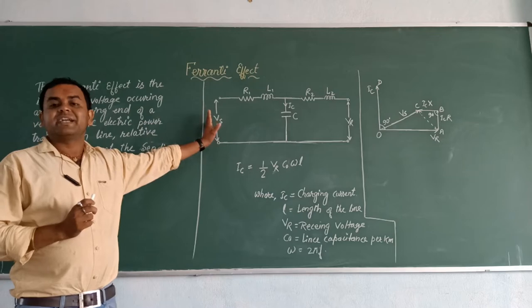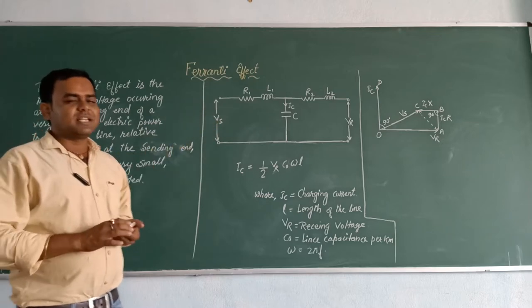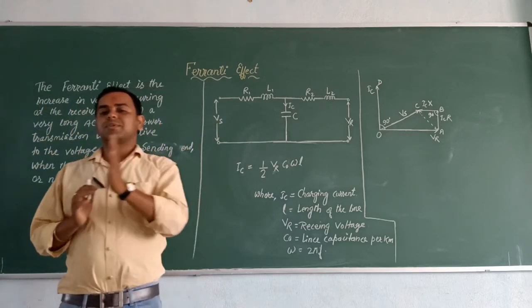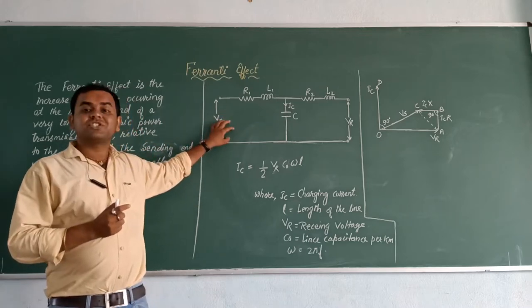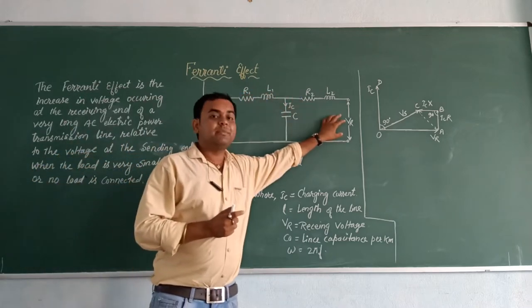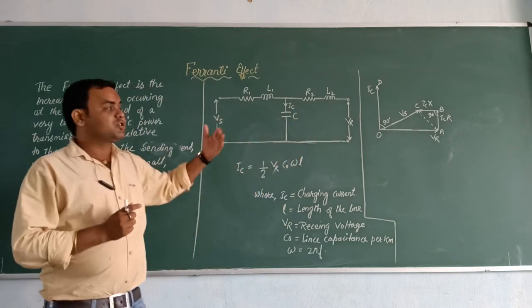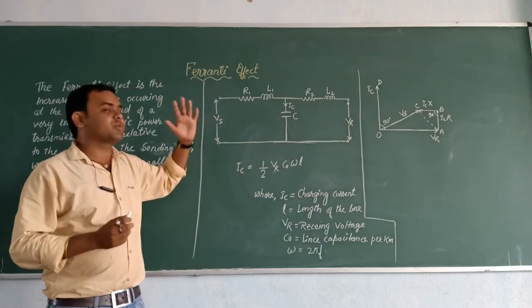So we normally know that when voltage is transferred, there is a voltage drop. So sending end should be more and receiving end should be less. But here is something different, so let's get to know how it occurs.